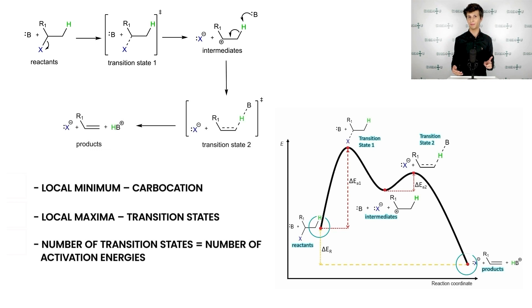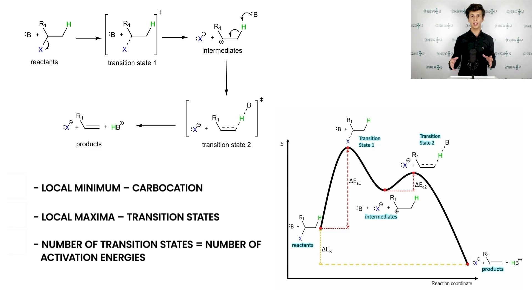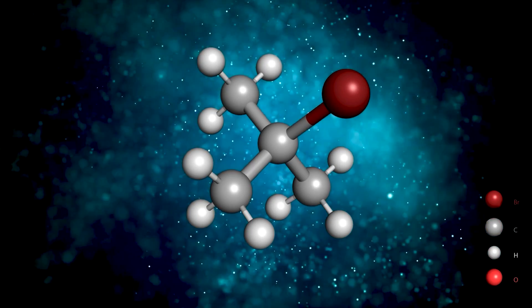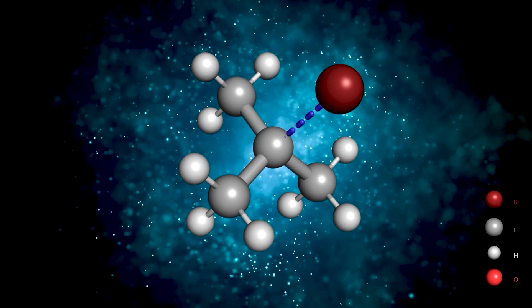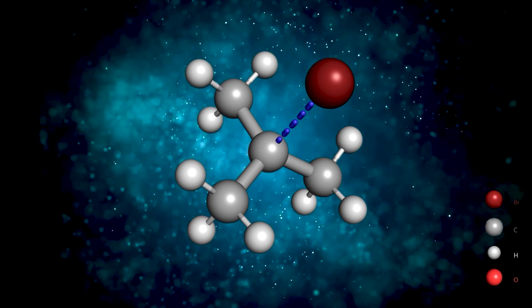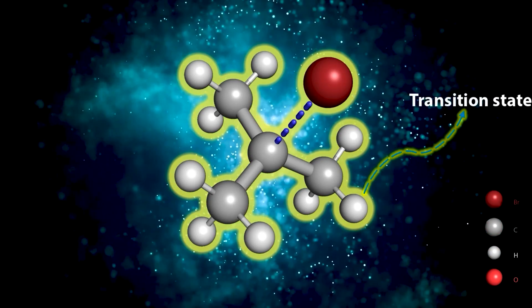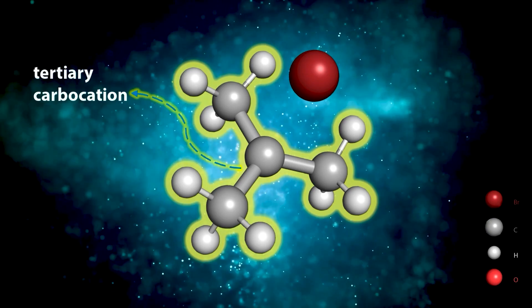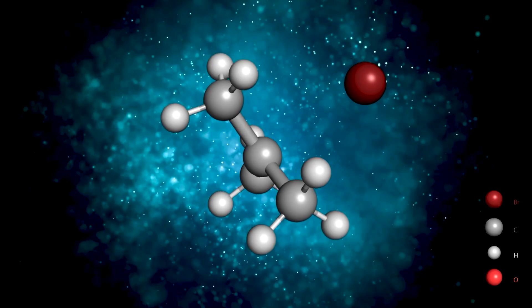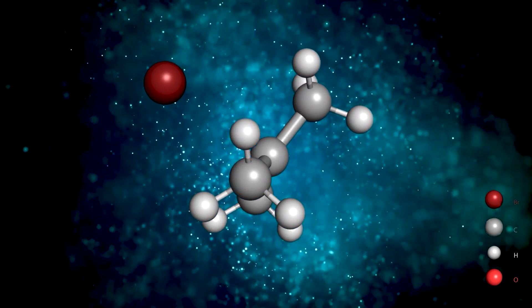There are two global minima: the first represents reactants — substrate and base B; the second represents products — namely leaving group, olefin, and protonated base BH+. If you compare the energy profile of this mechanism with that of SN1, you will find a lot of similarities. Reaction energy is depicted in yellow and activation energies in red. A typical example is the dehydrobromination of tert-butyl bromide mediated by water. The first step is heterolytic cleavage of the CBr bond, passing through the first transition state and yielding bromide anion and a tertiary carbocation — a quite stable intermediate.